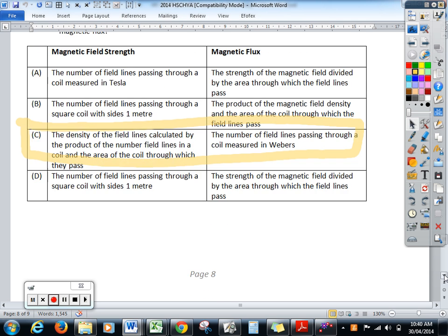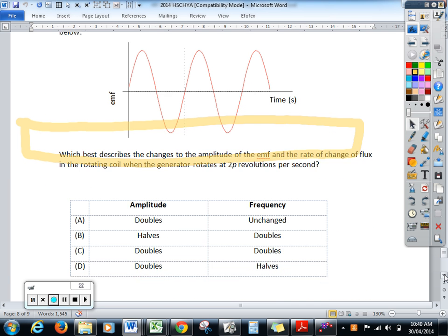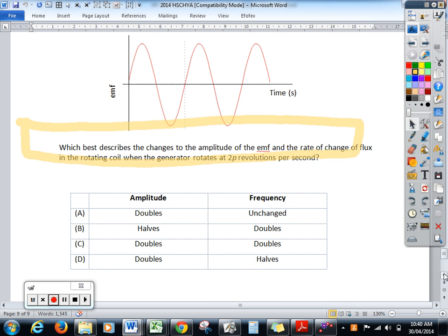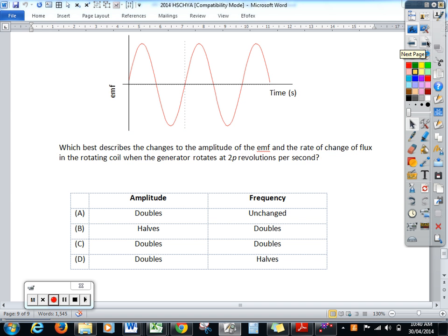And the last one here. There's the EMF. And it says we're now going to spin the coil twice. If you spin the coil twice as fast, then the amplitude, the EMF, will also go twice as fast, or double. But the other thing that happens is because it's spinning twice as fast, it's a higher frequency. So the frequency has to double and the amplitude also has to double. So the only option for that one is C. Thank you very much, ladies. We'll go back to our normal broadcast next lesson.